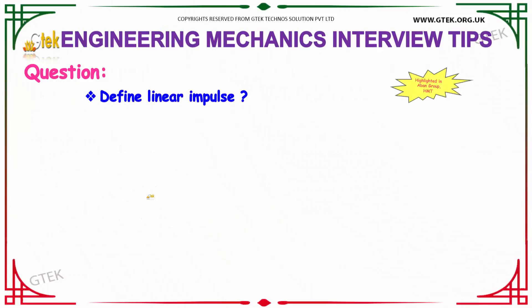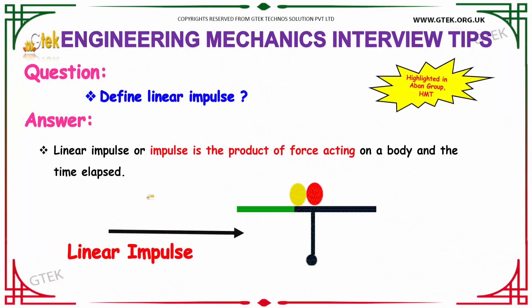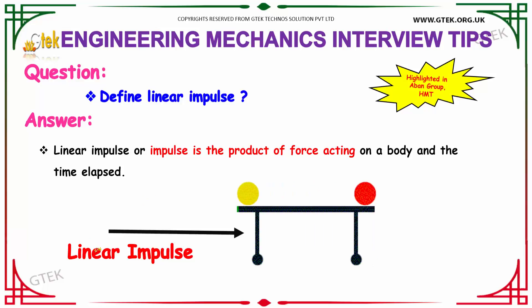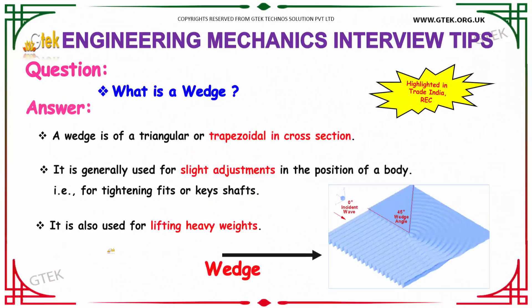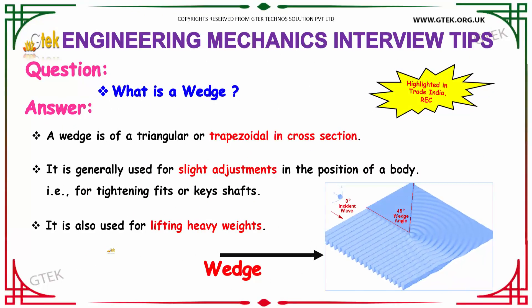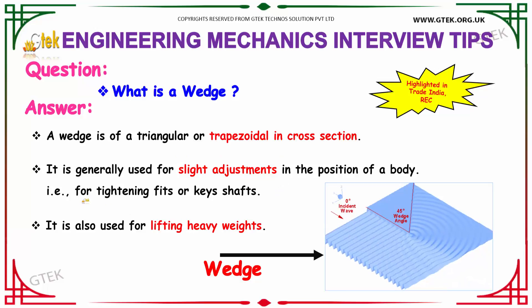Define linear impulse. Linear impulse, or impulse, is the product of the force acting on a body and the time elapsed. Next question: what is a wedge? A wedge is triangular or trapezoidal in cross section. It is generally used for slight adjustments in the position of a body — that is, for tightening fits or key shafts — and is also used for lifting heavy weights.